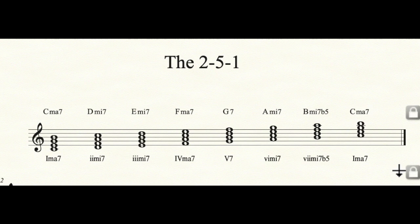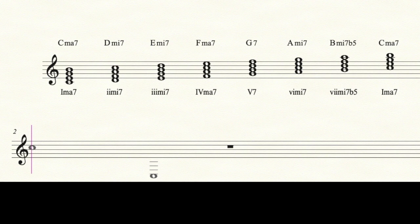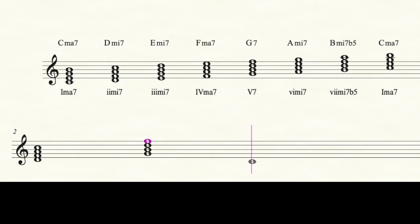The three chords that are really important for us here are the 2 chord — D minor 7 — the 5 chord — G7 — and the 1 chord — C major 7. There is also an alternative to C major 7 that's important to learn: C6. C major 7 and C6 function exactly the same way — they mean the same thing. You would use C6 instead of C major 7 if the melody might clash, or if you just wanted a little bit of movement.